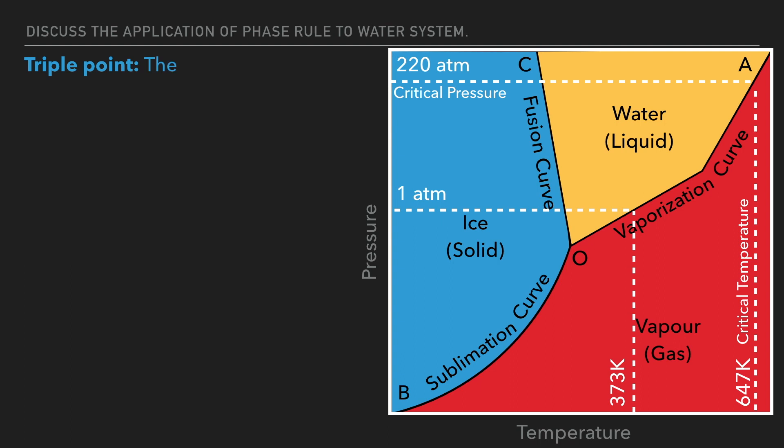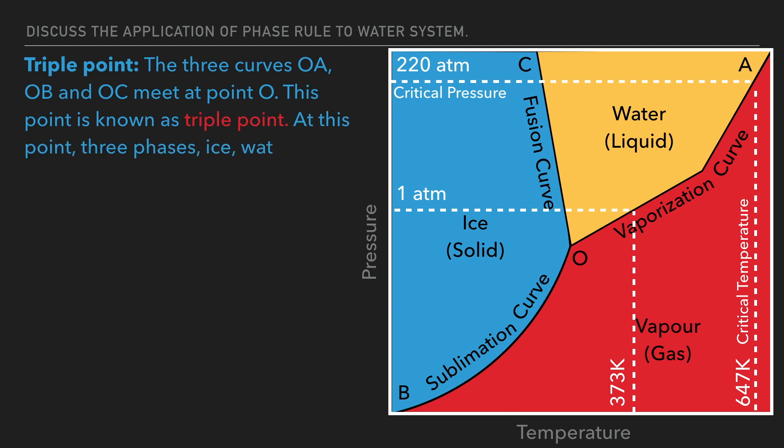Now let's talk about the triple point. The three curves OA, OB and OC meet at point O. This point is known as triple point. At this point, three phases solid, liquid and gas are in equilibrium.